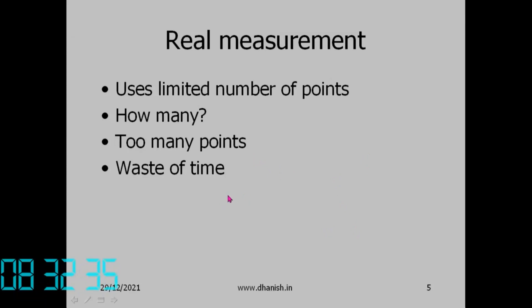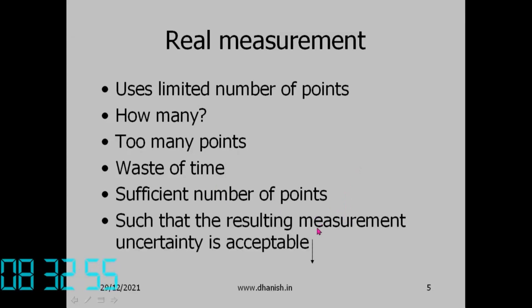Too few points is also a problem. A manufactured circle may not be perfectly circular — it may be oval or triangular. We must take sufficient points to capture the actual shape. The sufficient number of points is linked to how much measurement uncertainty is acceptable, which connects back to conformity decisions we have already discussed.